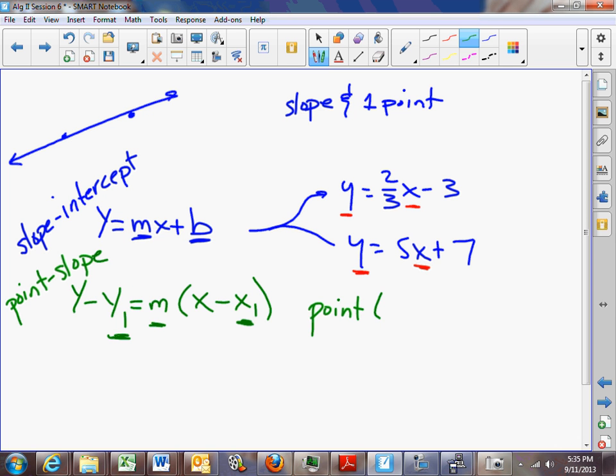will be the point x1, y1, and the slope, of course, will be m, and so you'll put the slope number in for m, and you'll put the x number in for x1, and you'll put the y number in for y1.